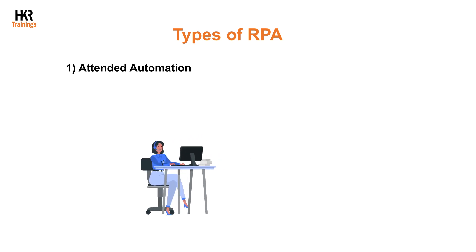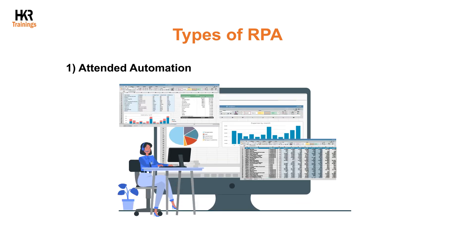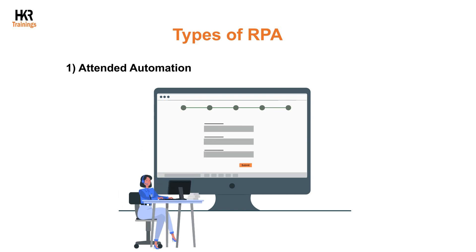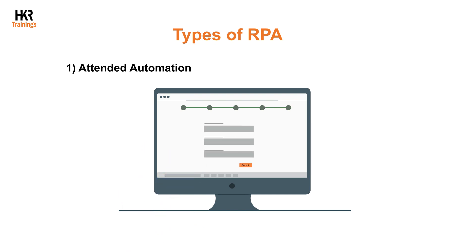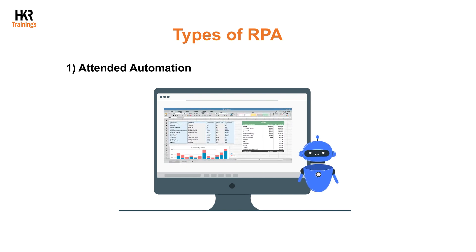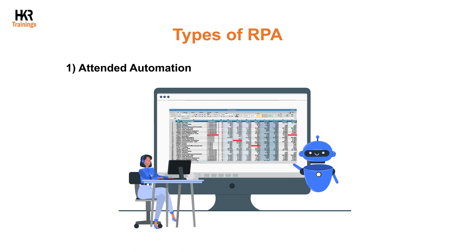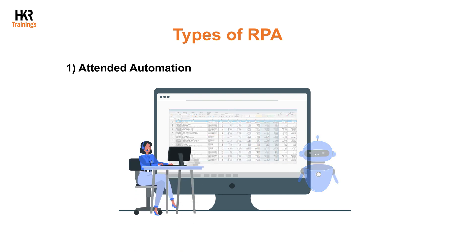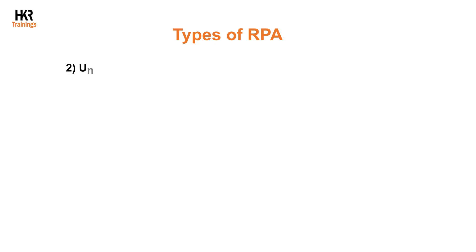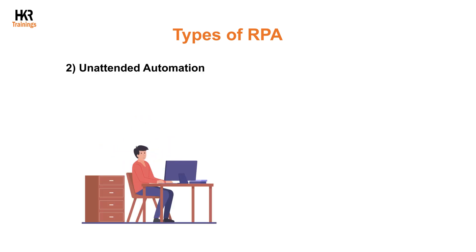Consider a scenario where a customer care agent would typically require a maximum of three screens and five manual steps to finish processing a transaction. Rather than going through all of it manually, RPA allows robots to work as representatives, carry out relevant tasks, and consult representatives when needed. Employees who work directly with customers and still need to perform manual chores can use attended automation to supplement these duties.